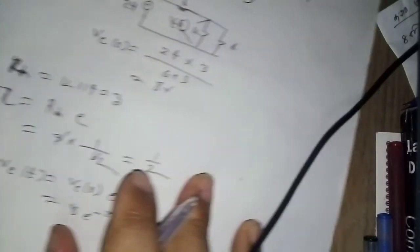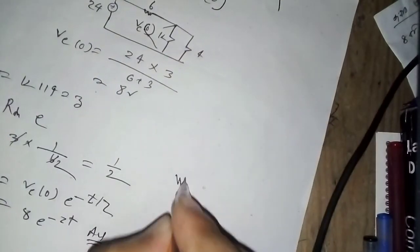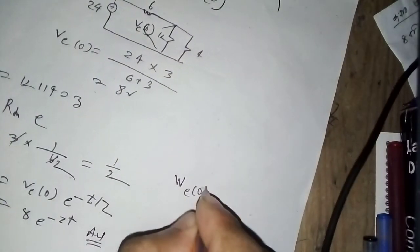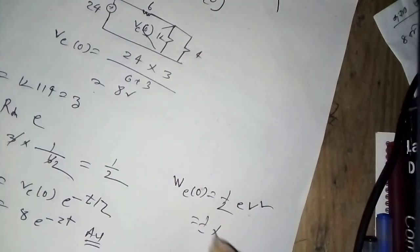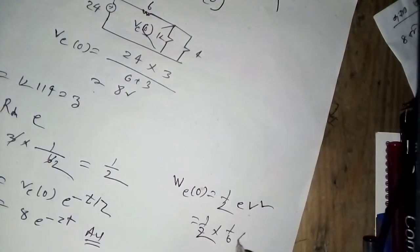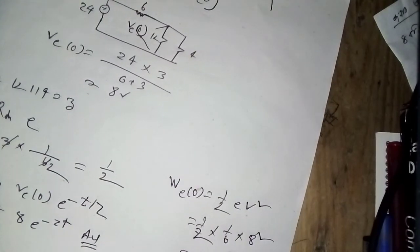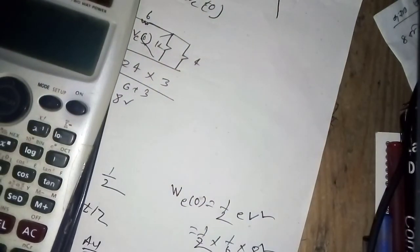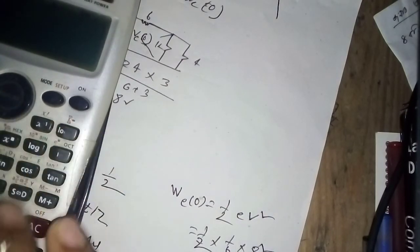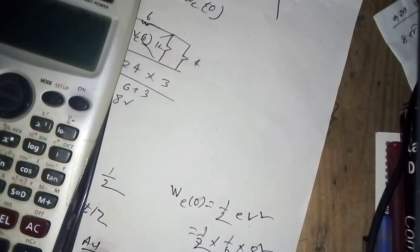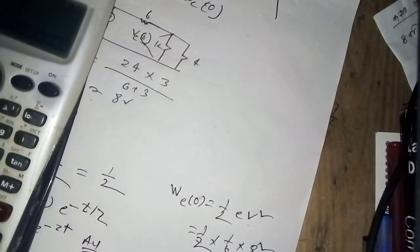The energy stored is W equals half C Vc squared, which is half times 1 by 6 times 8 squared, equals 5.33 Joules.